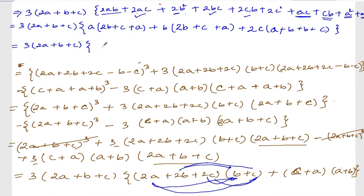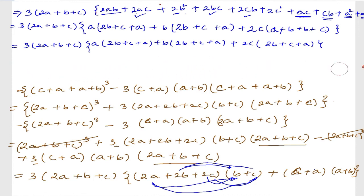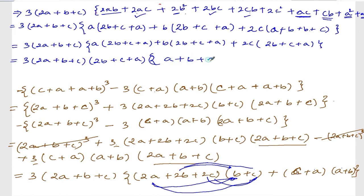Now: 3 times (2a plus b plus c). From this one, take (2b plus c plus a) common. What's the remaining out? Remaining out is (a plus b plus 2c). So from this one take (2b plus c plus a) common again — remaining out is (a plus b plus 2c). I think the answer is correct. Please do write in the comments below what is your answer, and if you didn't understand please tell me, I'll be happy to help you. That's all, thank you so much, we will meet in the next video.